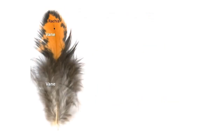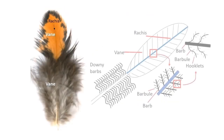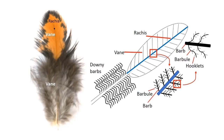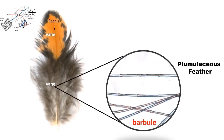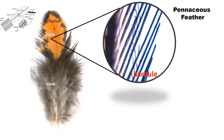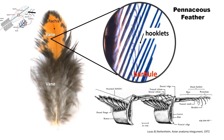The feather vane shows two types of vane. The vane is composed of barbs, and each barb branches into barbules. In one proximal pennaceous feather, the barbule has no structure. In the distal pennaceous feather, a specialized ectodermal structure called a hooklet is formed at the end of the barbule. Hooklets hold barbs tightly together, providing the integrated structure of the feather vane for flying.